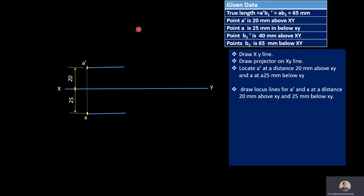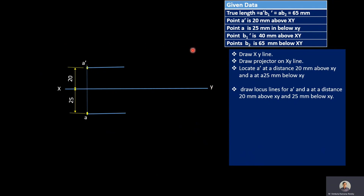In this problem, true length is given but true inclinations are not given. If true inclinations were given, we would directly draw the true length with true inclination in both front view and top view. Instead, the position of the other end B is given — B is 40 mm above HP and 65 mm in front of VP. So draw a locus line for B1' at 40 mm above XY line, and a locus line for B2 at 65 mm below XY line, both parallel to XY.